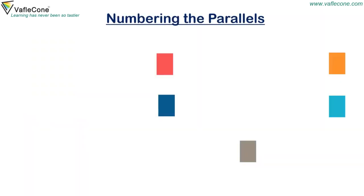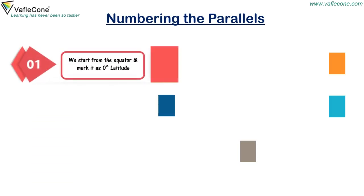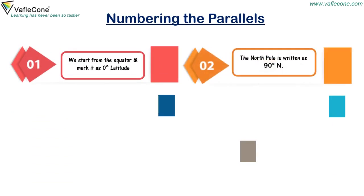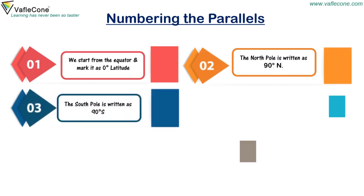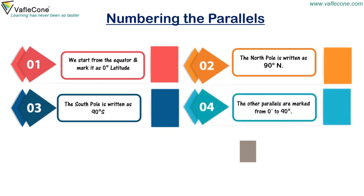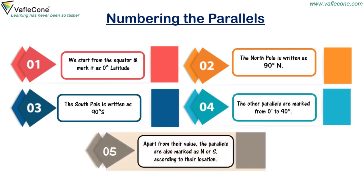Numbering the parallels. We start from the equator and mark it as 0 degree latitude. The north pole is written as 90 degree N and the south pole is written as 90 degree S. The other parallels are marked from 0 to 90 degrees. Apart from their value, the parallels are also marked as N or S according to their location.